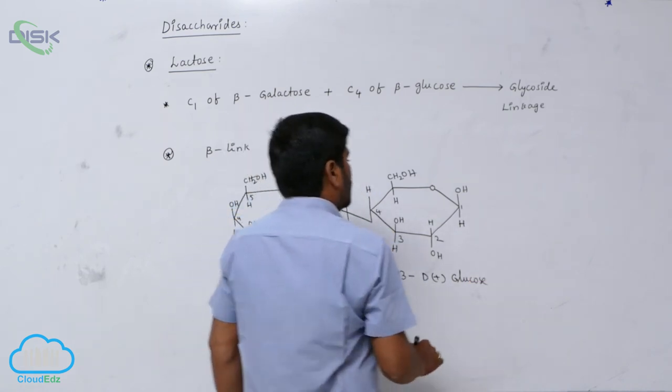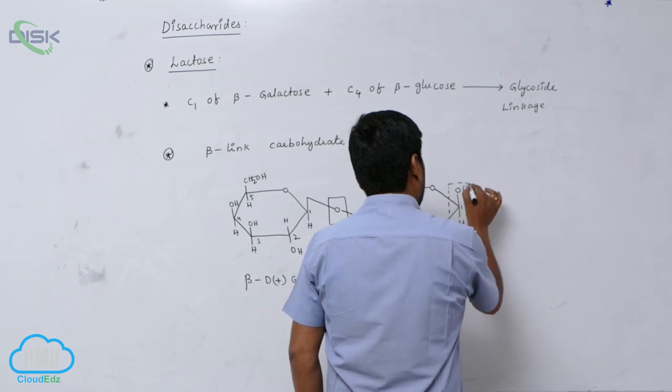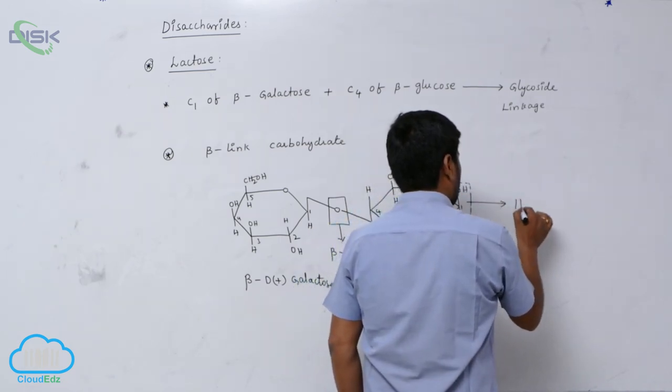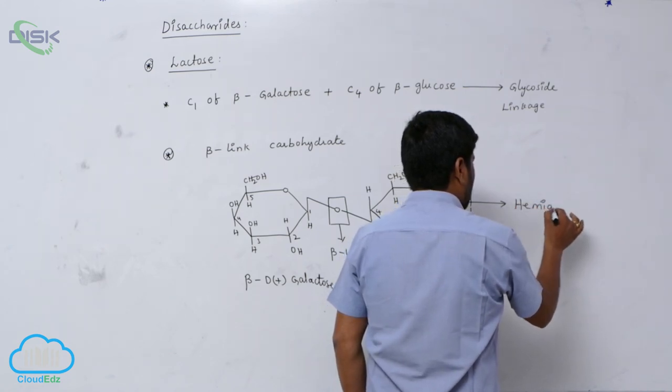Glucose now. This is a hemi-acetal linkage. This is known as what? Hemi-acetal linkage.